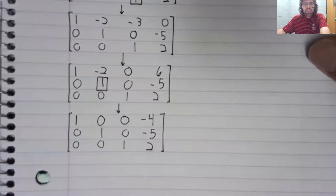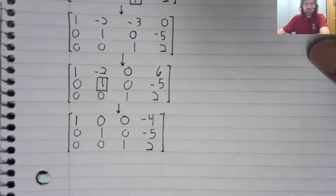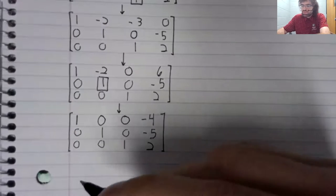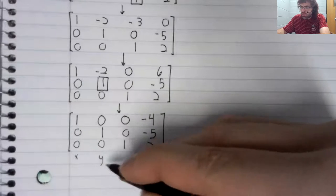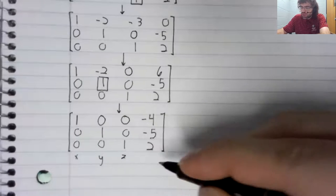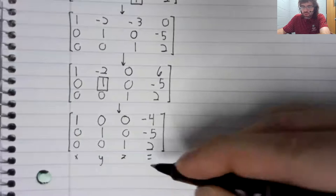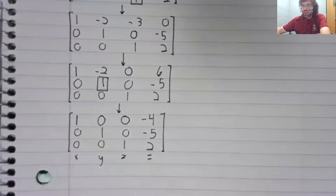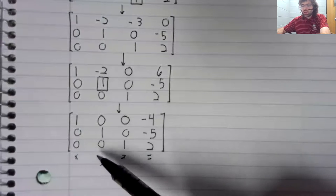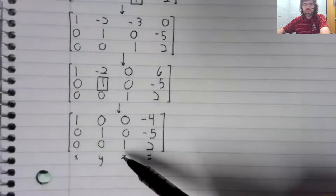Now we're in reduced row echelon form. And the power of this form kind of makes itself known with this next step.